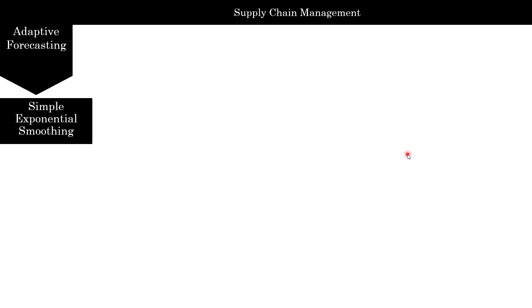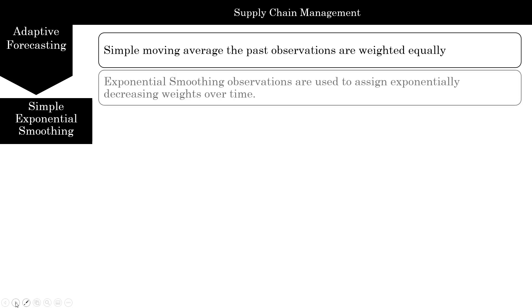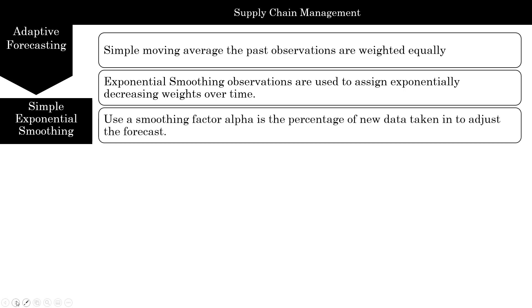We're finished with simple moving average and moving on to simple exponential smoothing. Simple moving average essentially takes all past observations and weights them equally — for a four-period average each observation is weighted 25%, for two-period it's 50%. In exponential smoothing, observations are assigned exponentially decreasing weights over time using a smoothing factor called alpha, which is the percentage of new data taken in to adjust the level. Both forecasting methods assume there is no trend or seasonality — they only look at level.